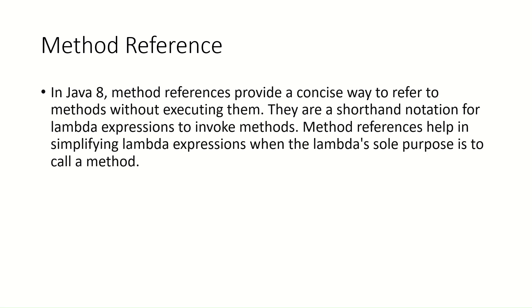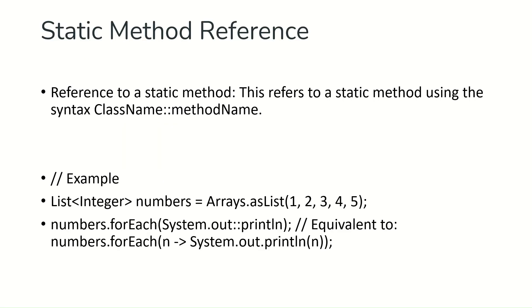Method references help in simplifying lambda expressions when the lambda's sole purpose is to call a method. Now let's look at the different types of method references available in Java 8. Before discussing types, let me explain how a method reference looks: you use the syntax class name, then double colon, then method name. This double colon notation is called the method reference operator.